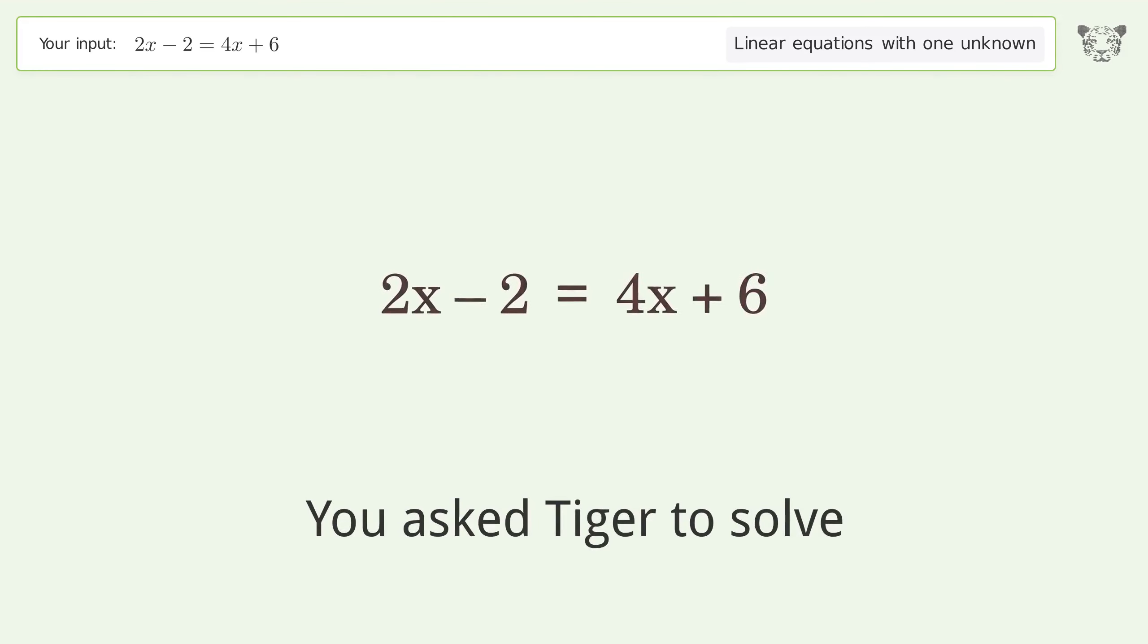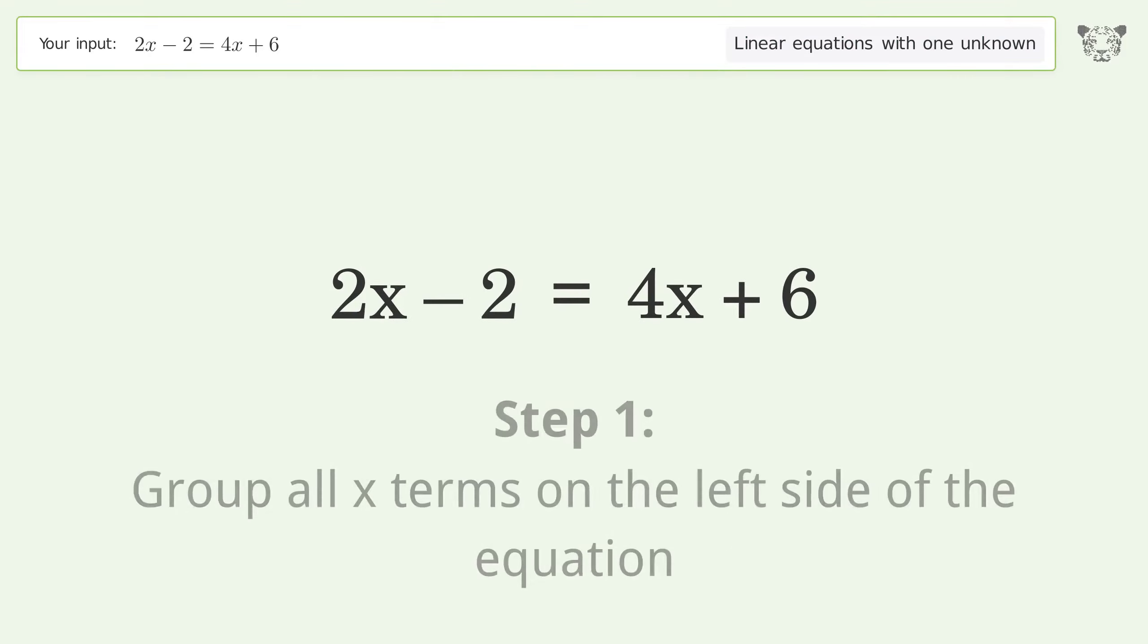You ask Tiger to solve this. It deals with linear equations with one unknown. The final result is x equals negative 4. Let's solve it step by step. Group all x terms on the left side of the equation.